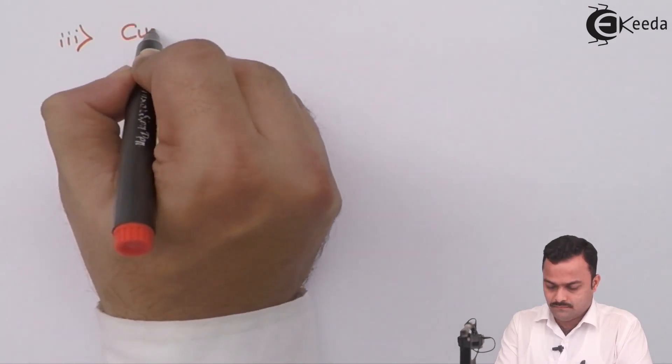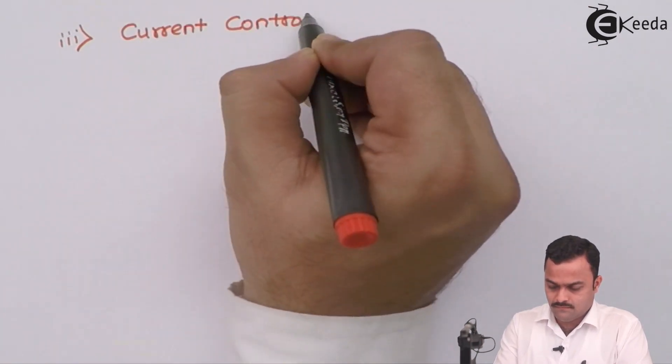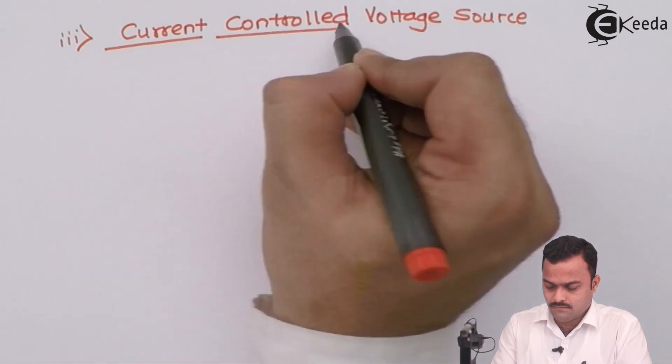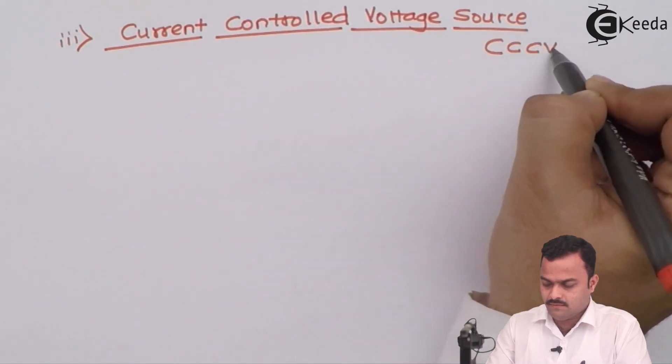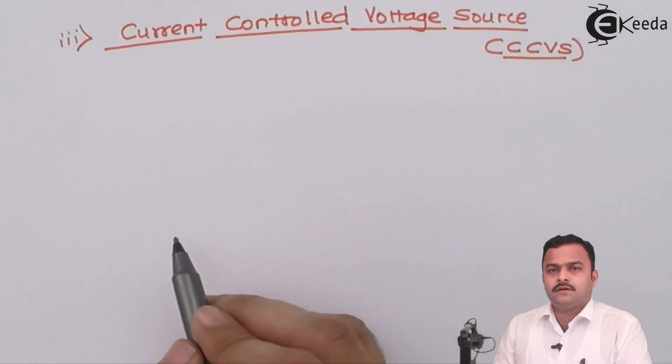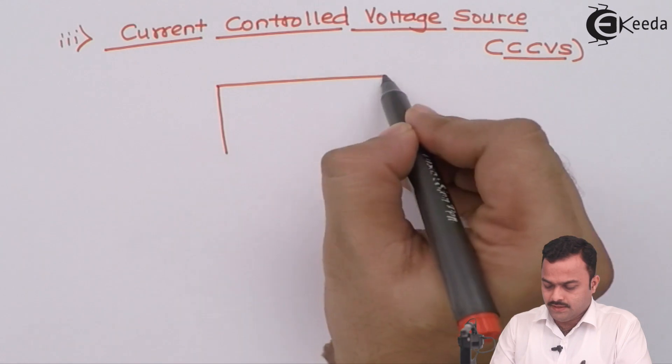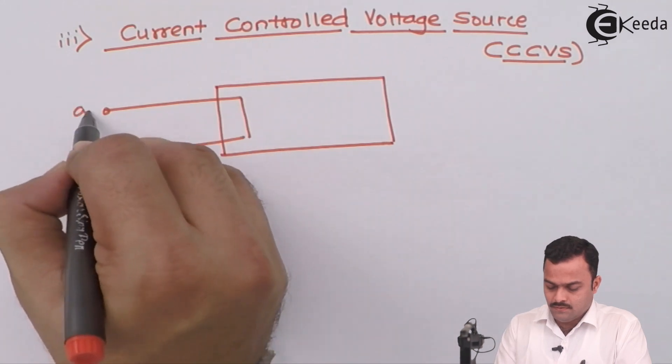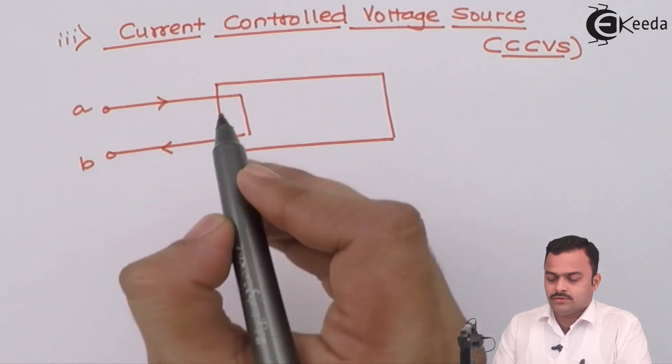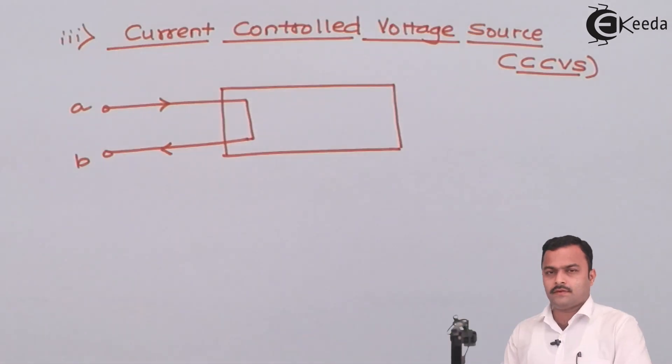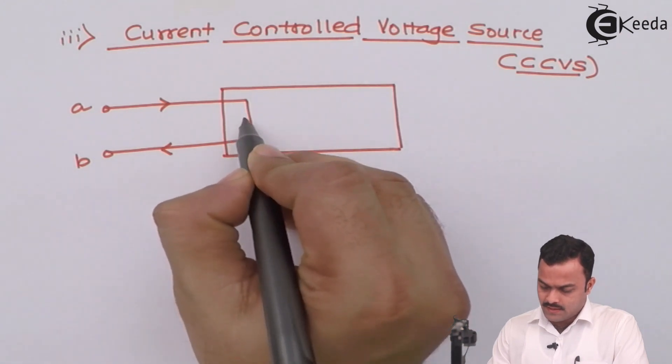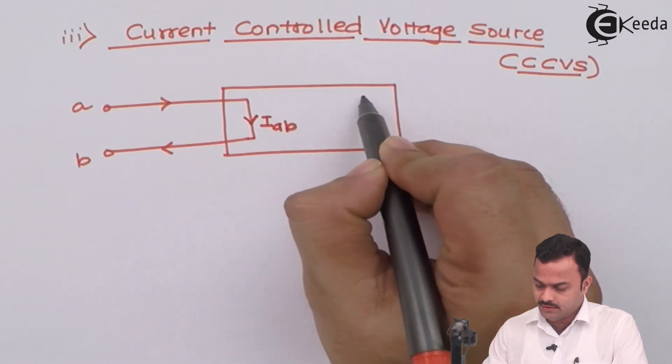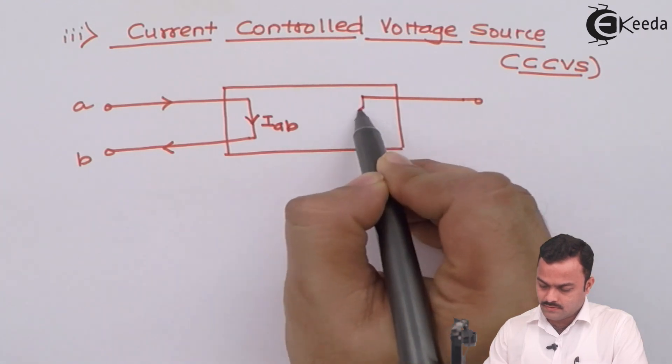That is current controlled voltage source, can be considered as CCVS. This time in the network we will have input current which is going from A to B. So we will consider the input current here is IAB which will control the voltage at output side in form of voltage source of this nature.